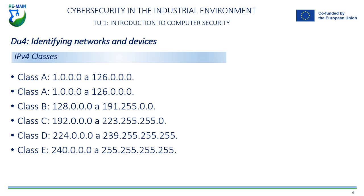There are five classes of IP addresses in IPv4, categorized by their address range. Class A IP addresses use the first 8 bits to identify the network and the remaining 24 bits to identify the device on the network. Class A addresses range from 1.0.0.0 to 126.0.0.0. Class B IP addresses use the first 16 bits to identify the network and the remaining 16 bits to identify the device on the network. Class B addresses range from 128.0.0.0 to 191.255.0.0. Class C IP addresses use the first 24 bits to identify the network and the remaining 8 bits to identify the device on the network.